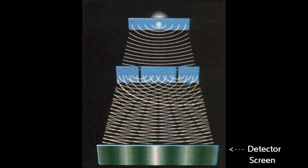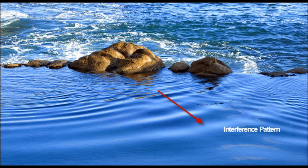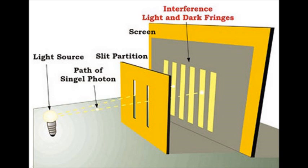In essence, particles when non-observed are actually acting as waves. To illustrate that further: when you have rocks dropped in water, the ripples create interference patterns. That illustrates why when you have a light source, an electron, or a single photon going through slits, it creates multiple lines — because it's actually acting as a wave as opposed to acting as a particle.